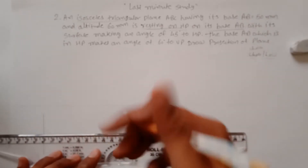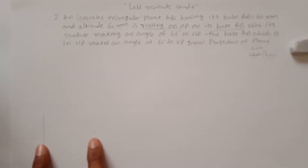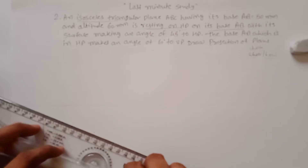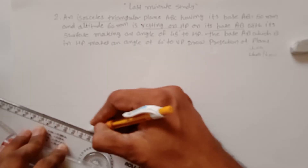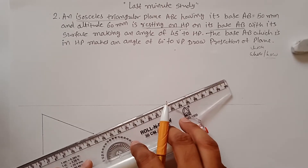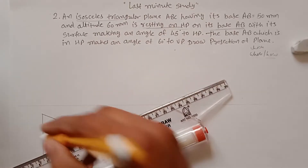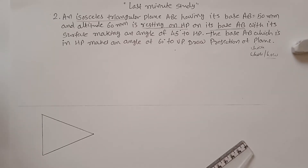You don't need to draw the altitude line because altitude is not a part of your plane. This distance from the base to this point is 60 mm, so no need to draw a line for the altitude. Then join the corners to form the isosceles triangle.